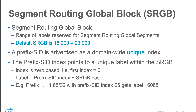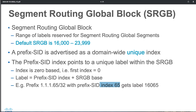The prefix SID index points to a unique label within the sRGB, and the index is zero-based — that is, the first index is zero, which is why we have 16,000. The label is your prefix SID index plus your sRGB base of 16,000. For example, a prefix 1.1.65 with a prefix index of 65 would have a label of 16,000 plus 65, that is 16,065 — and that's the prefix SID for that particular node.